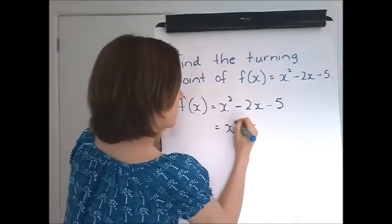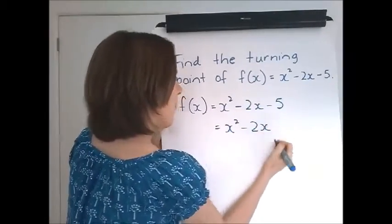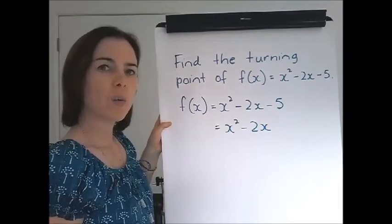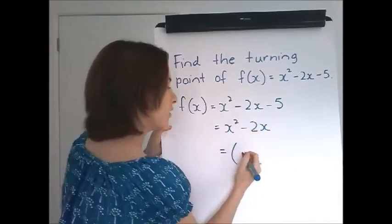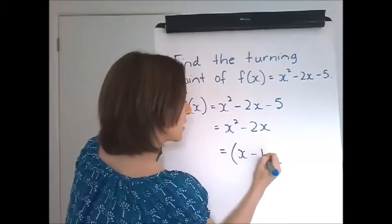So copy the first two terms. Figure out what the bracket squared would be on the next line. So halve the negative 2 to get negative 1.